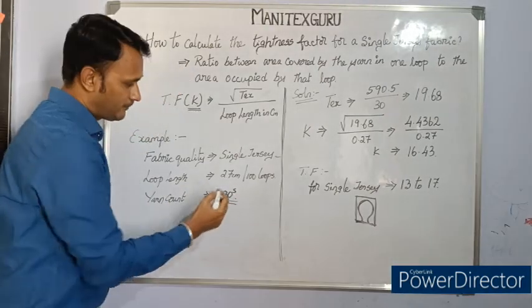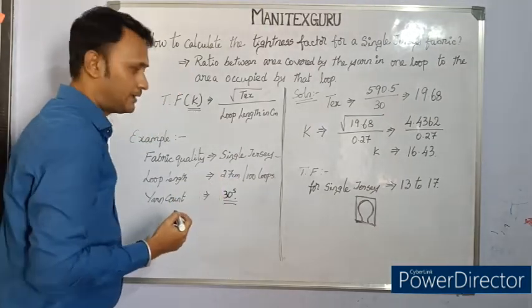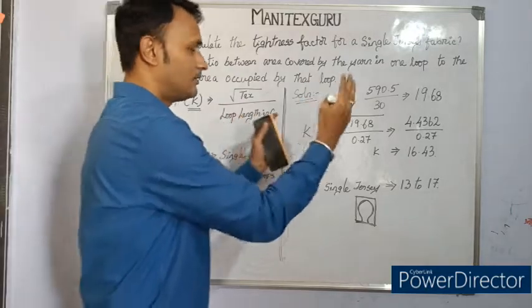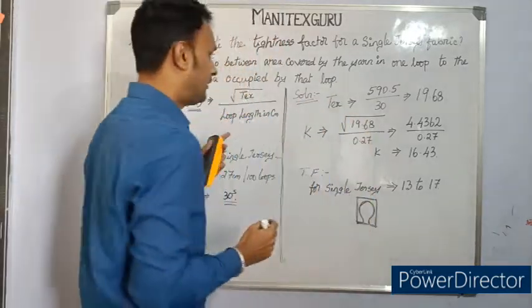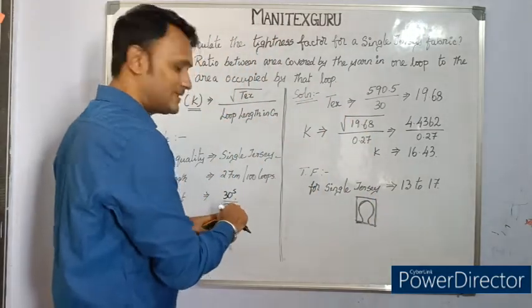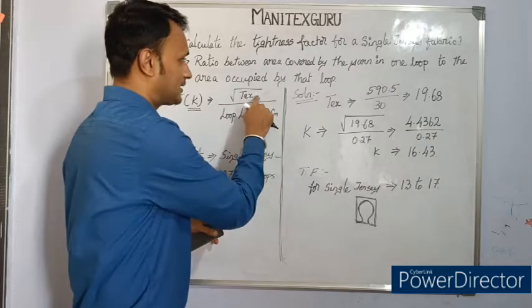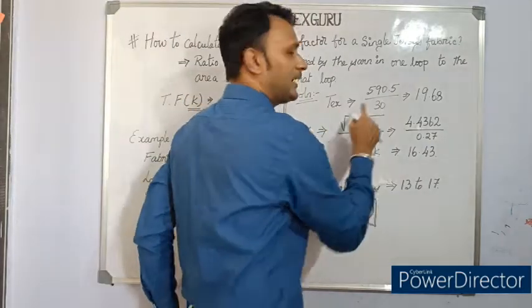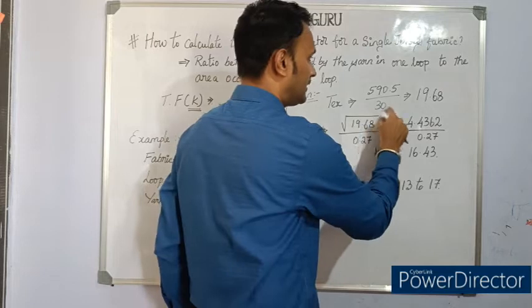First we need to convert Ne to Tex. We know Tex is equal to 590.5 divided by Ne, that is equal to 19.68.